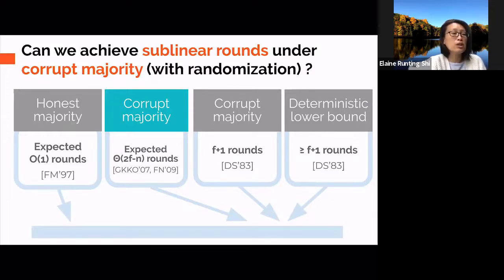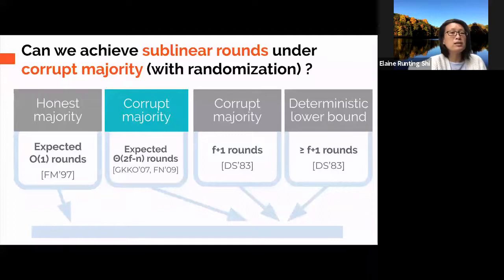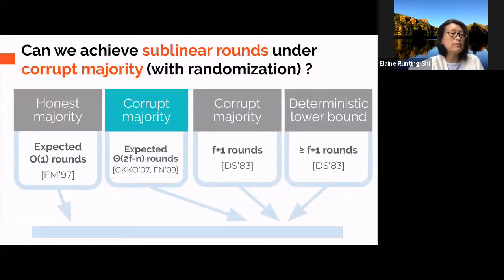Only in the very narrow regime, when the number of corrupt players F is just a tiny little more than a half, does their result give sublinear round complexity, but this is quite unsatisfying.